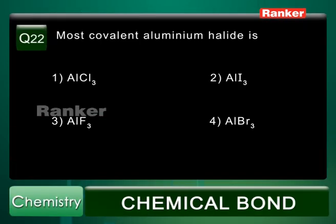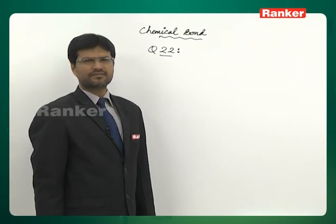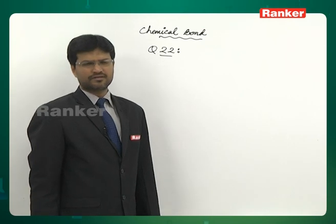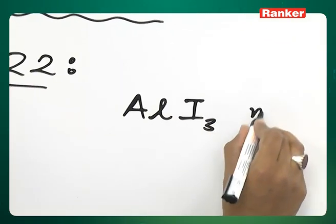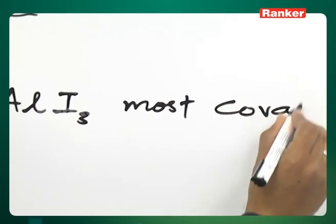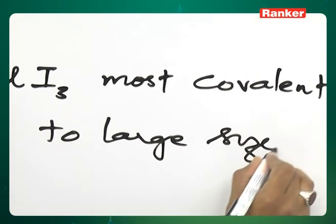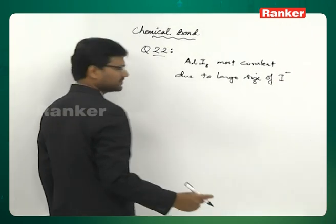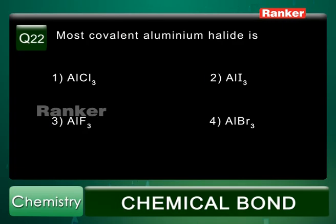Question number 22: Most covalent aluminum halide among them. First option AlCl3, second option AlI3, third option AlF3, fourth option AlBr3. In all cases, the cation is common — aluminum. They differ in the nature of anion, and the largest anion among them is I minus. Therefore, AlI3 is the most covalent due to large size of I minus. I minus has the largest size among all the halides, so its polarizability is high and covalent nature is high. Answer is the second option.